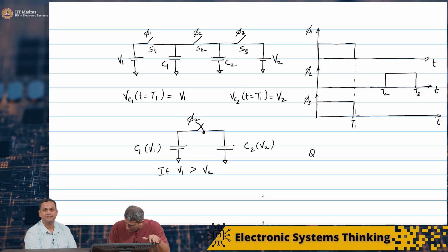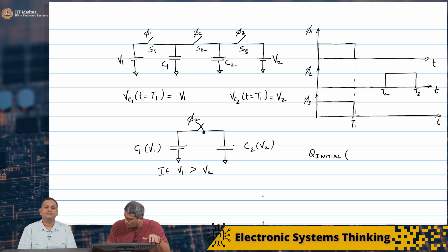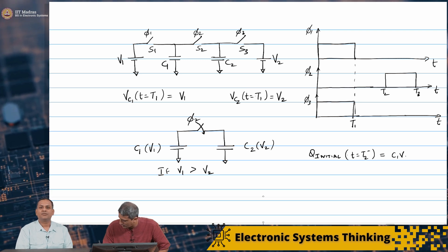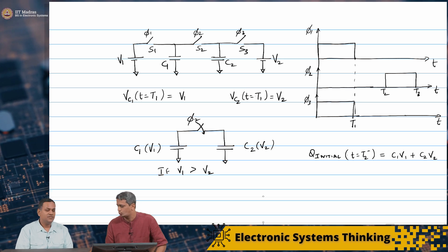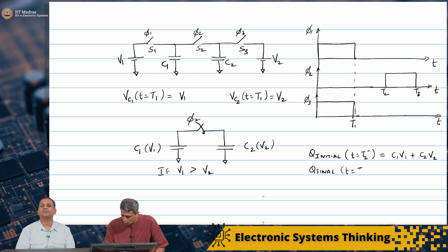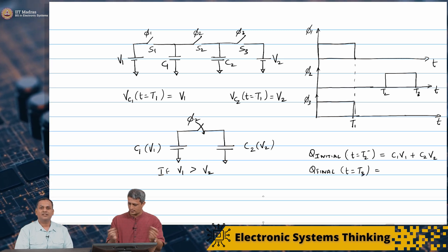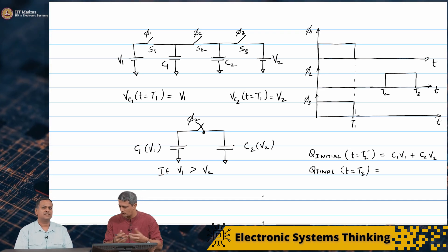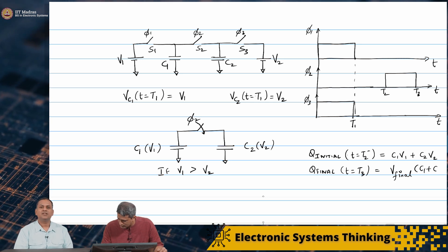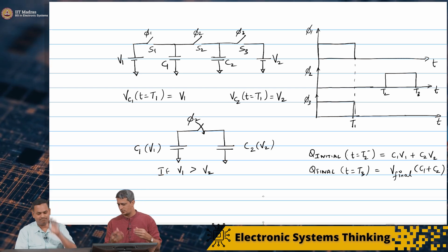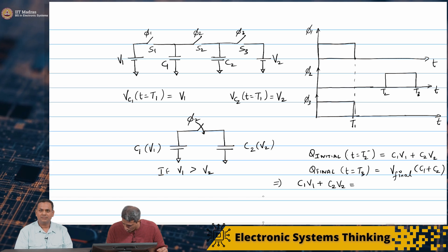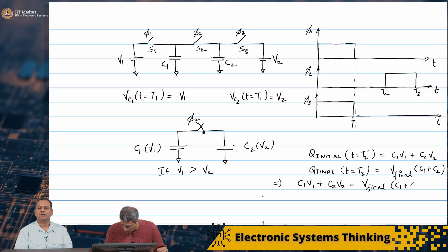The initial charge in the system — at t equal to T2 minus — is simply C1 times V1 plus C2 times V2. At the final state, at t equal to T3, both capacitors come to the same voltage V_final, so the current stops. The final charge is V_final times (C1 + C2), because you have C1 times V_final plus C2 times V_final.